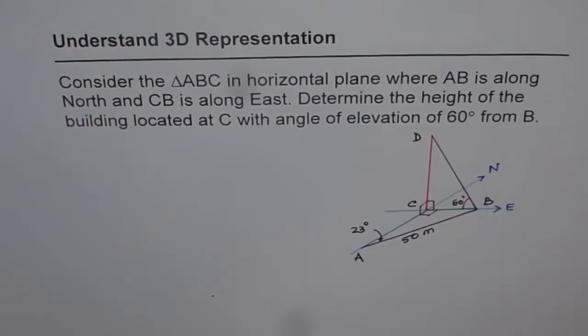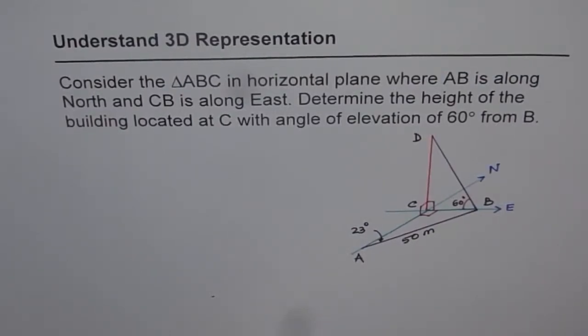Let us try to understand 3D representation and a method of solving such problems using trigonometry. Consider the triangle ABC in horizontal plane, where AB is along north and CB is along east. Determine the height of the building located at C, with angle of elevation of 60 degrees from B.